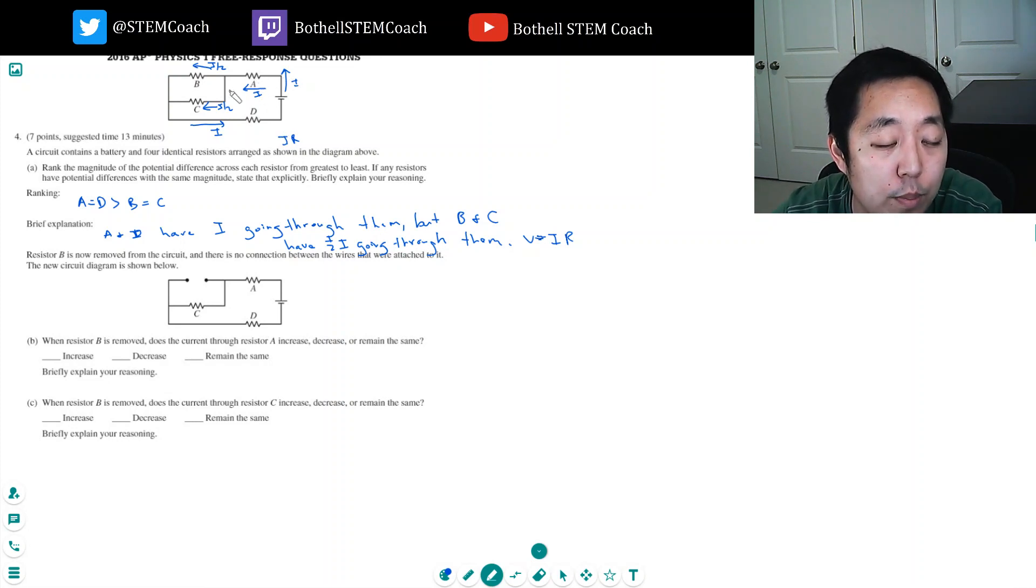A and D have the full amount of current. Whatever, I don't know what this current is, but whatever it is, A and D have the same amount going through it. And B and C have half that amount.